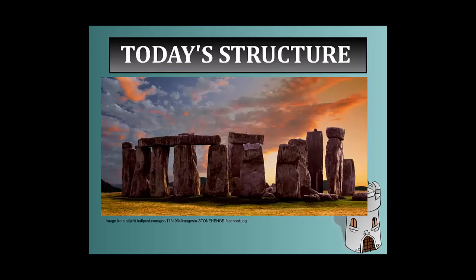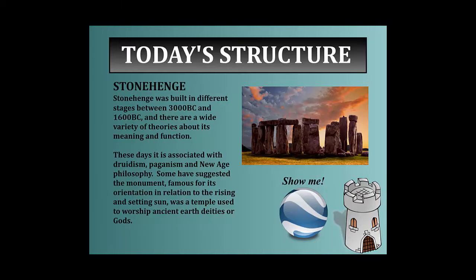Today's structure is another famous one you're probably aware of — Stonehenge. Stonehenge was built in different stages between 3000 BC and 1600 BC, and there are a wide variety of theories about why it was built and what it was designed to do. These days it's associated with Druidism, paganism, and New Age philosophy. Some have suggested that the monument is famous for its orientation in relation to the rising and setting sun, and that it was a temple used to worship ancient earth deities or gods.